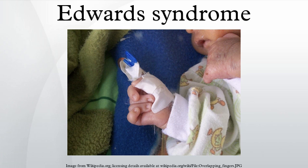Additional physical features include clenched hands, choroid plexus cysts, underdeveloped thumbs and/or nails, absent radius, webbing of the second and third toes, clubfoot or rocker bottom feet, and in males, undescended testicles.